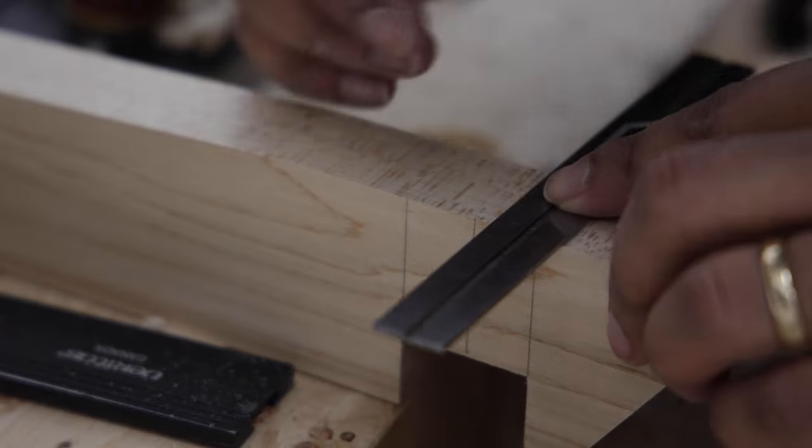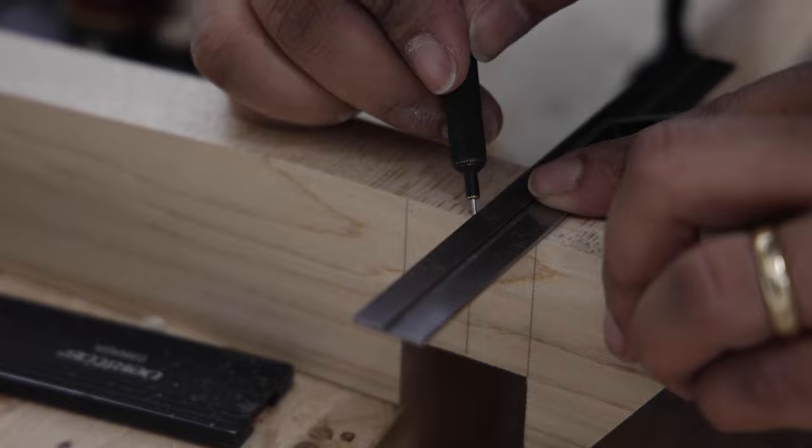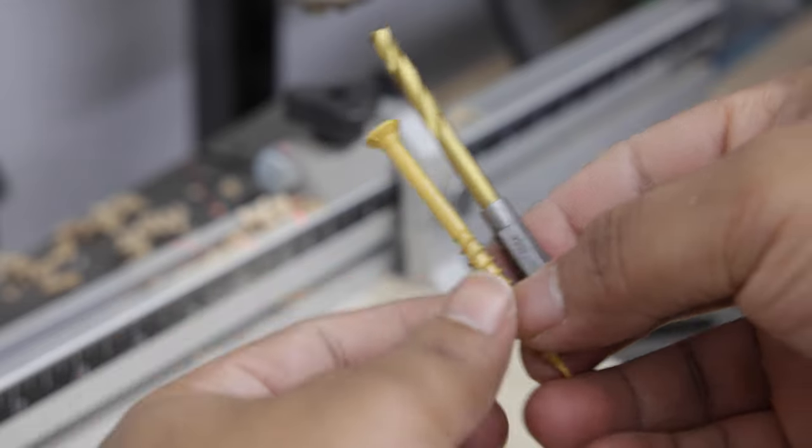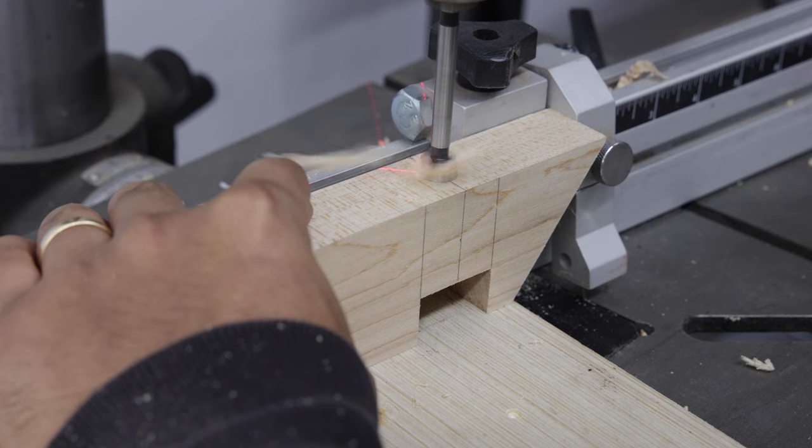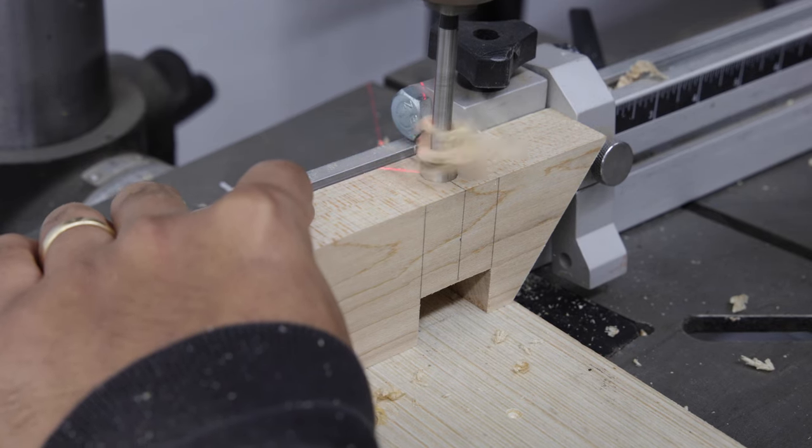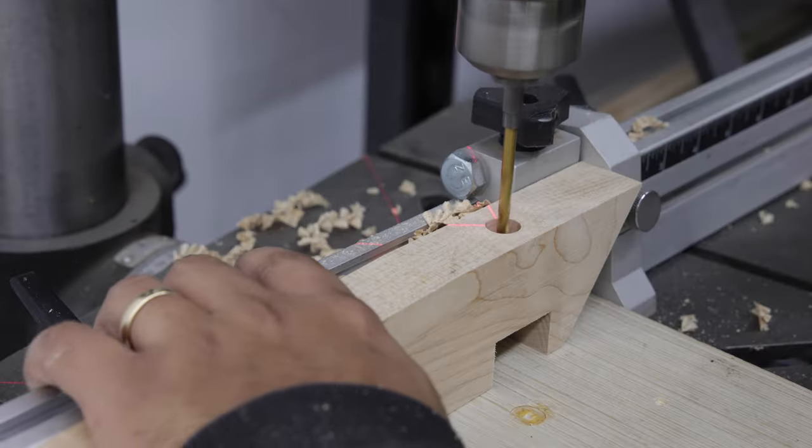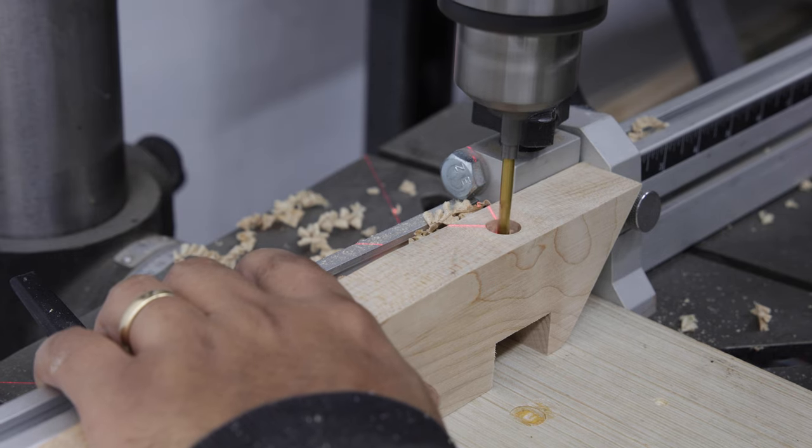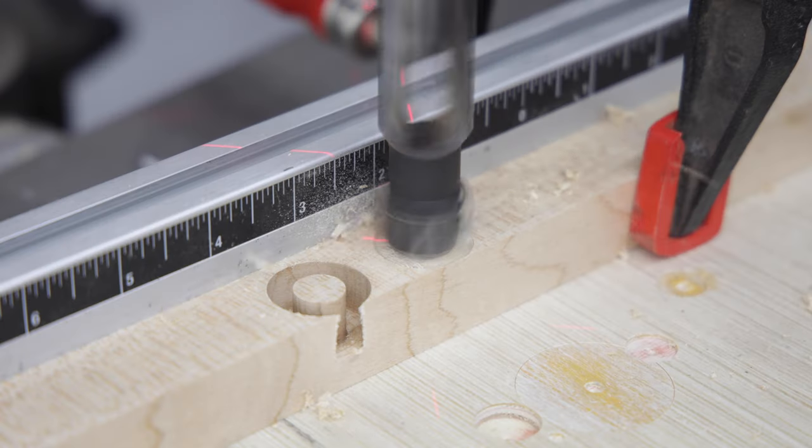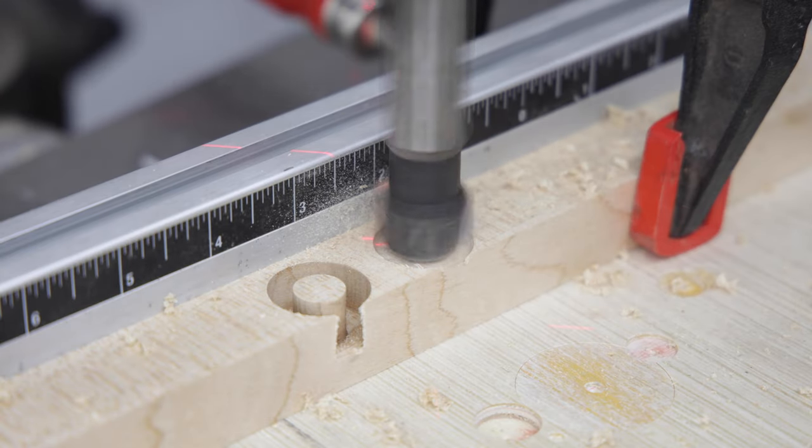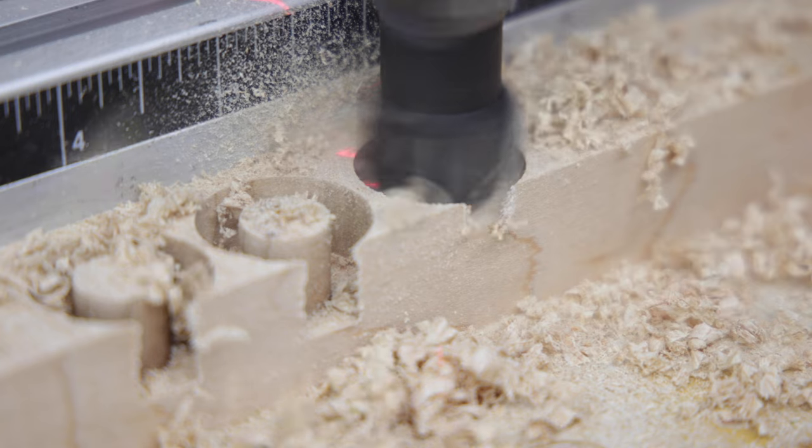Clamping a piece like this can be tricky, instead I want to drive a long screw through the legs that can act as clamps. We can hide the screws by making matching plugs with a cutoff piece of the same maple.